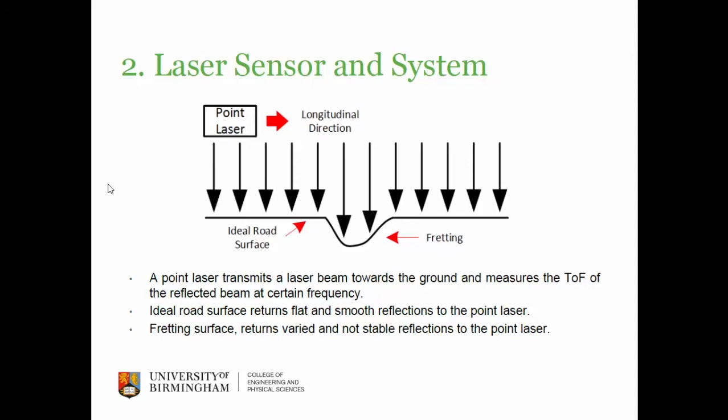Here I'm showing the primary idea of how the point laser works. The point laser transmits a laser beam towards the ground and measures the time of flight of the reflection back to the receiver. Ideally, if we have a good road surface, it should be very flat with a smooth reflection back to the point laser. But if we have some damage like here, the reflection will be rapid and unstable.